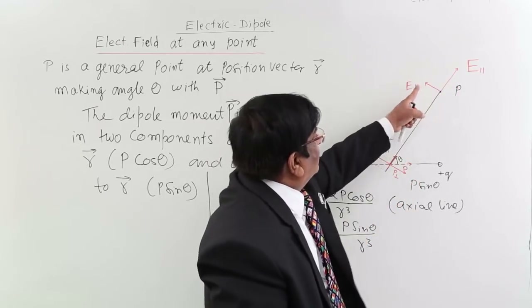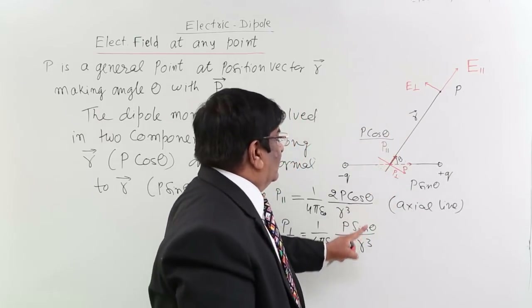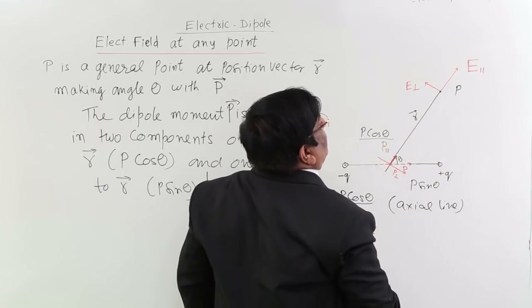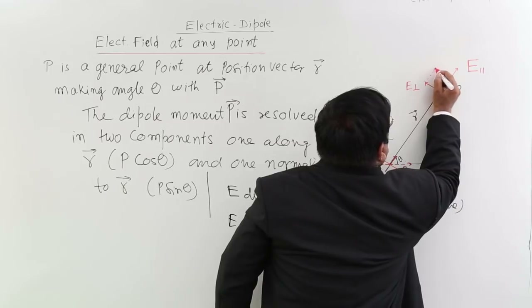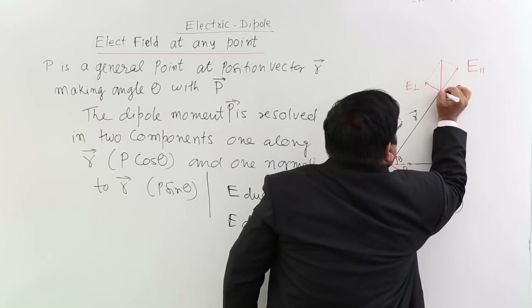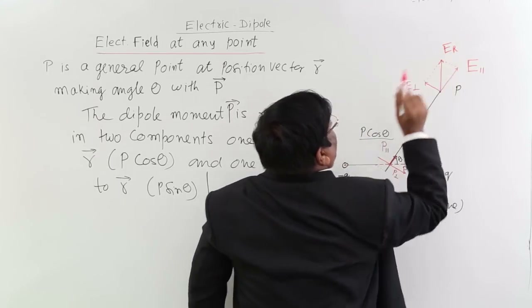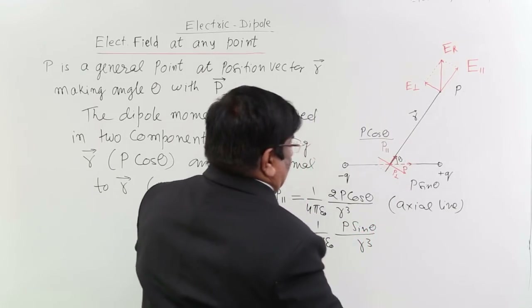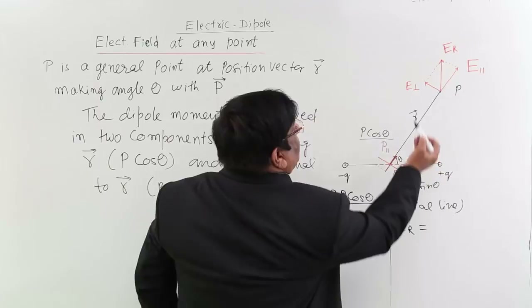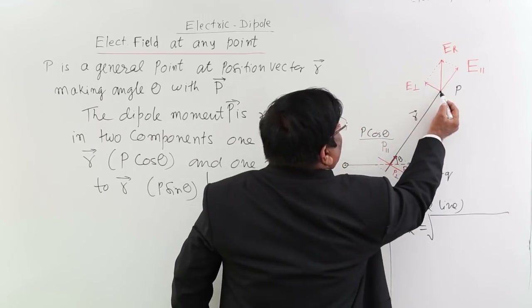We now have two electric fields at point P with known magnitudes and directions. Using the parallelogram law, we complete the parallelogram and take the diagonal as E resultant at point P. Since E parallel and E perpendicular are at right angles to each other, E resultant equals the square root of the sum of their squares.